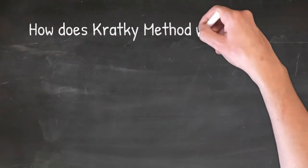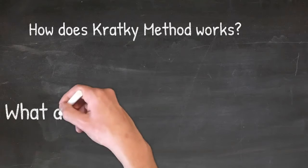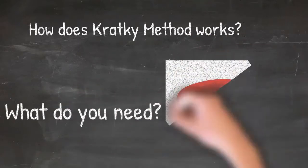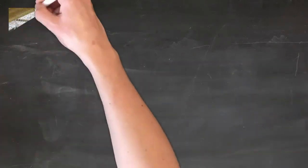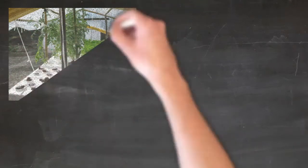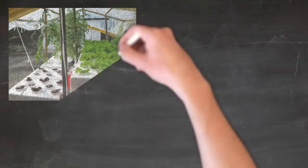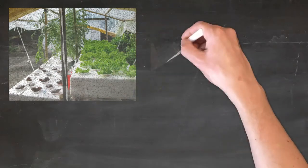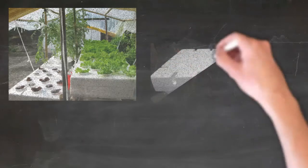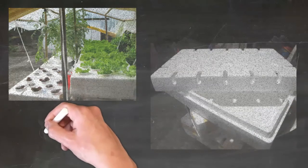How does Kratky method really work? Simple lang. These are the things that you need. Number one, you need to have a grow box. Yung grow box can be a form of any type of medium that can hold water, and you have to ensure that the medium or the grow box that you will use is really has no holes.